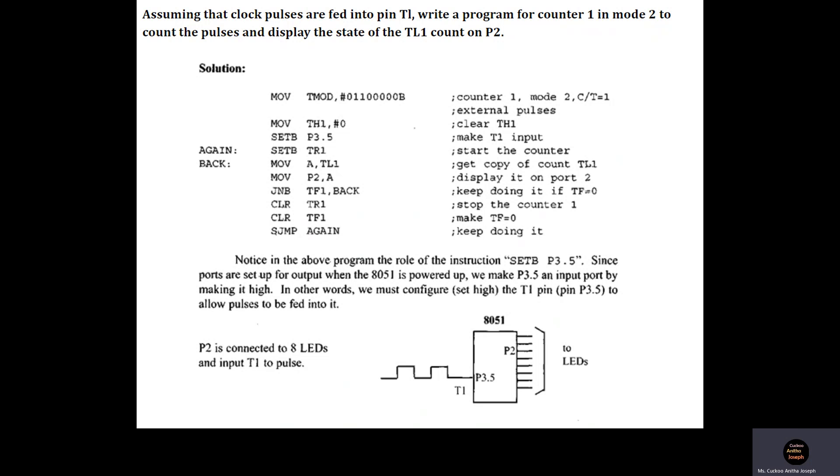So the CT bar bit of timer 1 should be equal to 1, and it is also asked in the question that mode 2 should be selected.